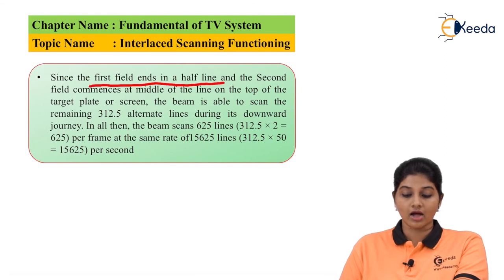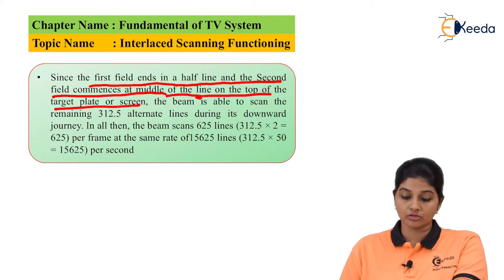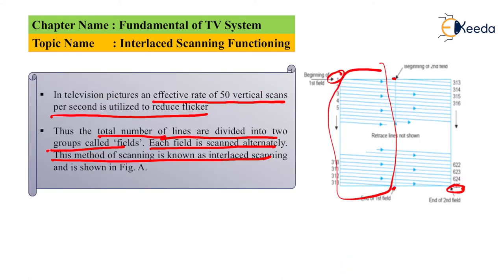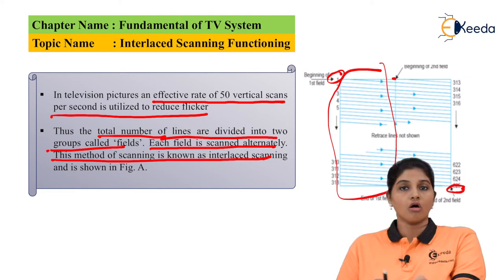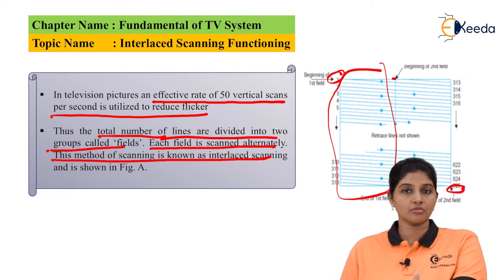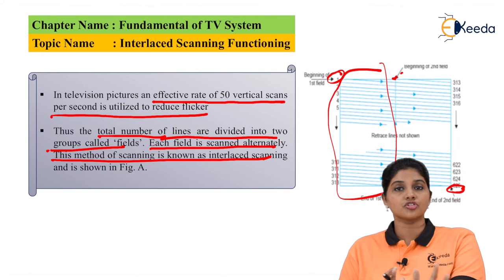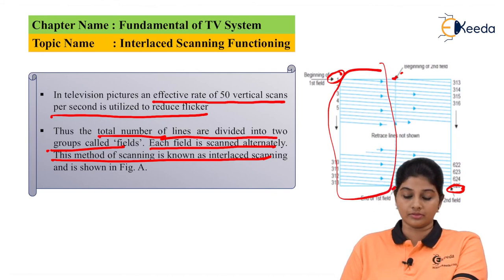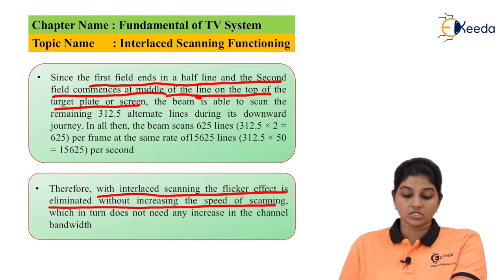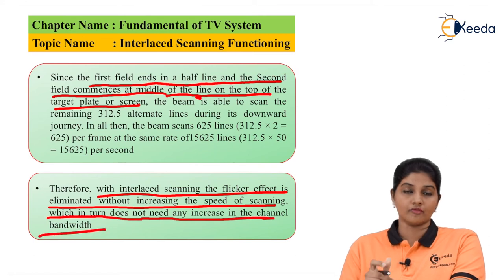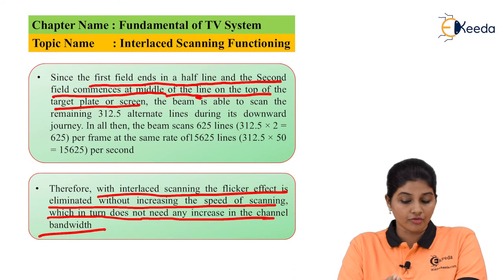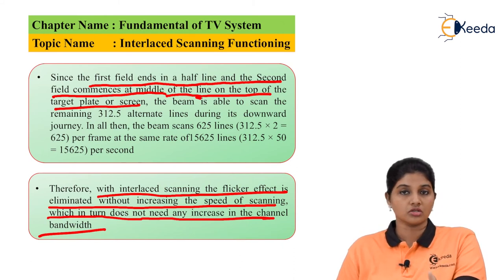Since the first field ends at the half-line and the second field starts at the middle of the line at the top of the screen, from the diagram we can see that at the 312.5 line mark the first field ends, indicating that scanning is complete for half the screen. The electron beam then travels back to the middle of the screen and begins the second scanning. In this way, both halves are scanned alternately but not simultaneously. Therefore, with interlaced scanning, the flicker effect is eliminated without increasing the speed of scanning, which in turn does not require any increase in channel bandwidth.